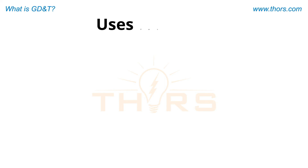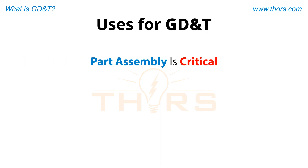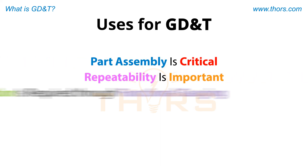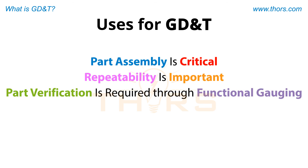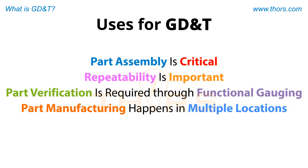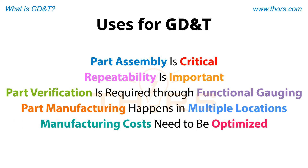GD&T should be used when part assembly is critical, repeatability is important, part verification is required through functional gauging, part manufacturing happens in multiple locations around the world, and when manufacturing costs need to be optimized.